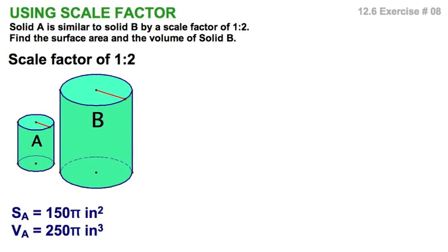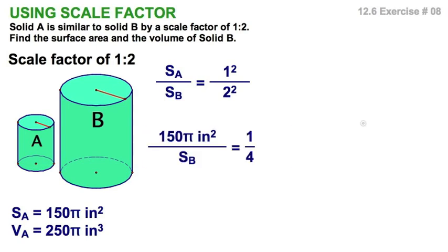But areas, as you recall, a little bit different. The surface area, the ratio of the areas, that is, is the square of the ratio of the corresponding sides. And of course, that would mean that the 150 pi square inches for A is to the surface area of B as one is to four. Or you could just say multiply it times four. And four times 150 is 600. So surface area B, 600 pi square inches.